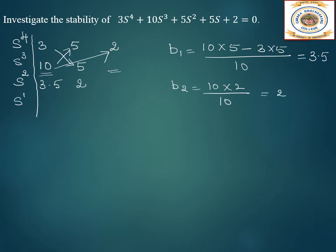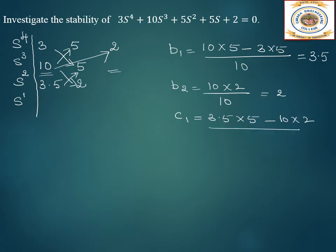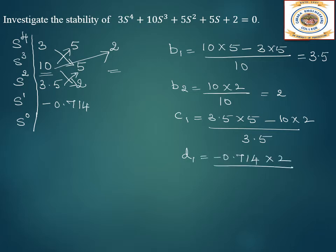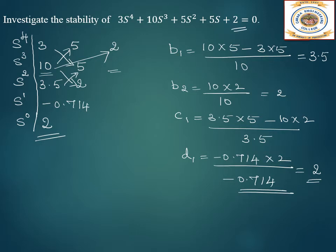For s¹: c1 = (3.5×5 − 10×2) / 3.5 = −0.714. Then for s⁰: d = (−0.714×2) / (−0.714) = 2. Note that the s⁰ term is always the aₙ term of the characteristic equation.